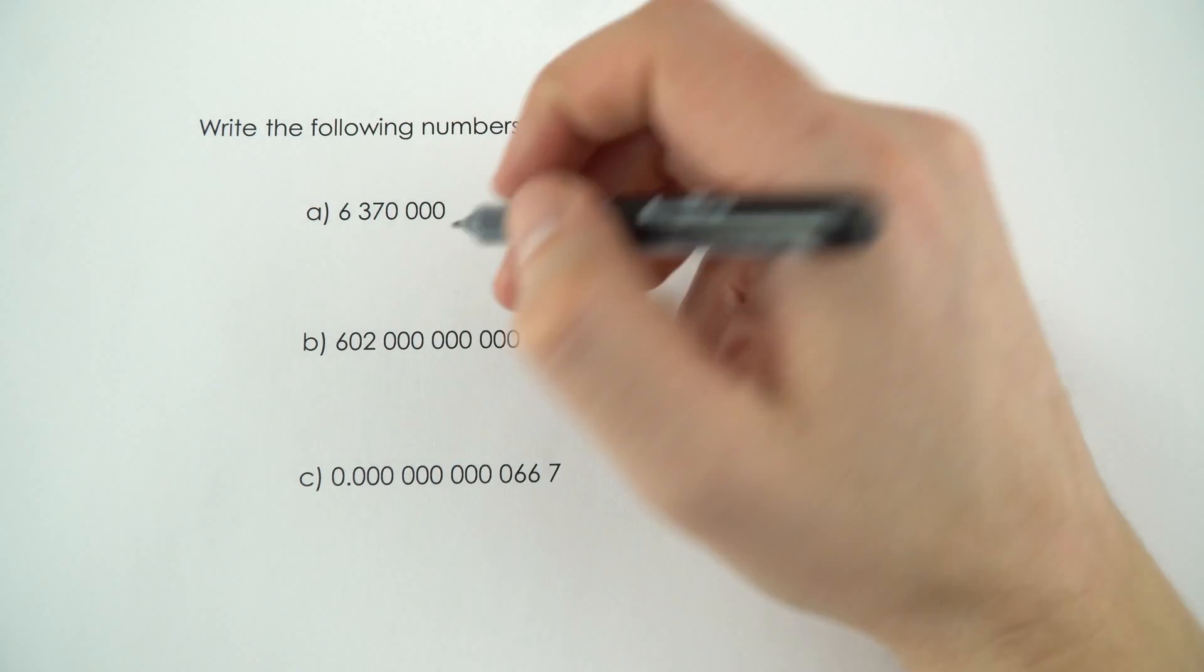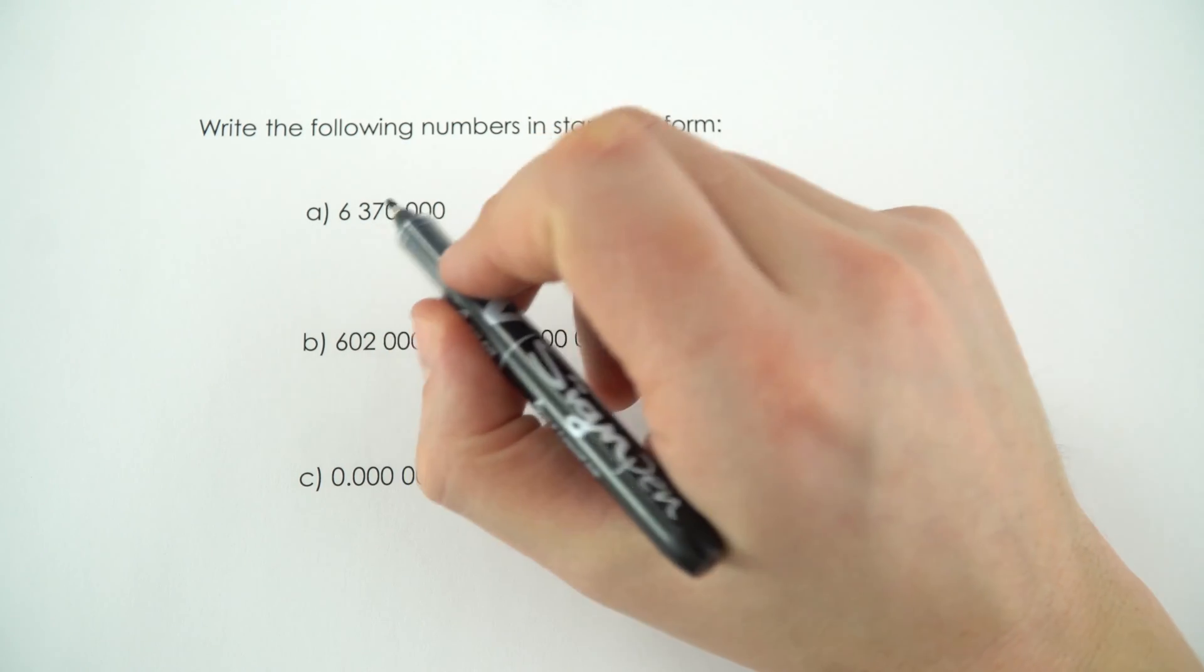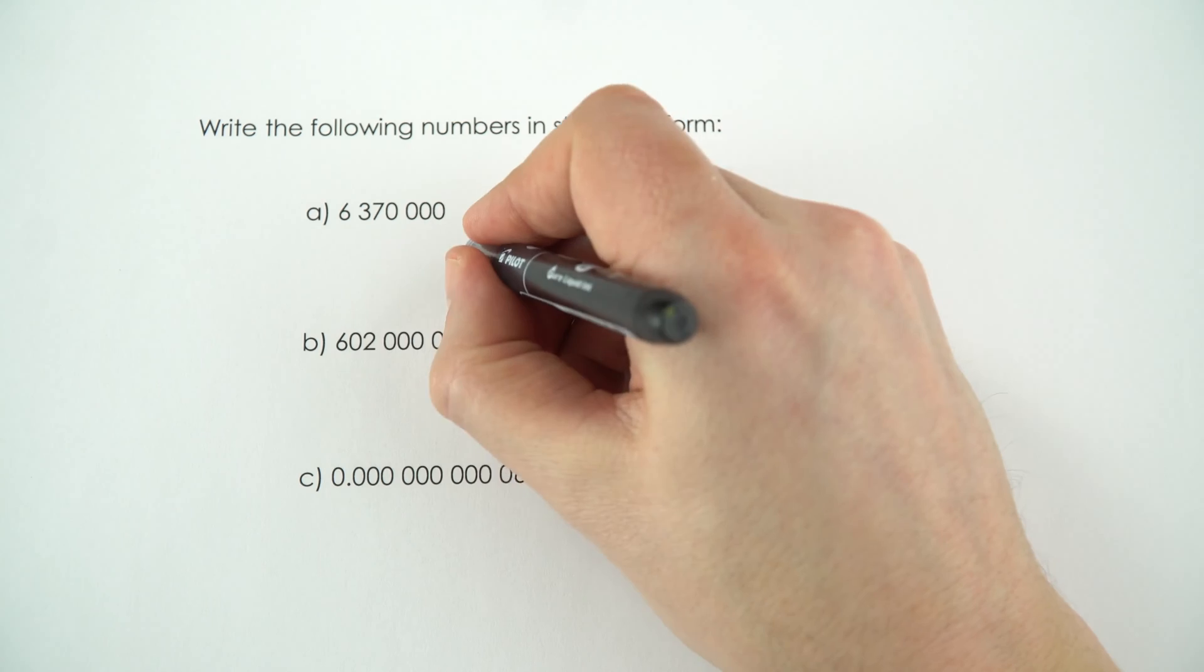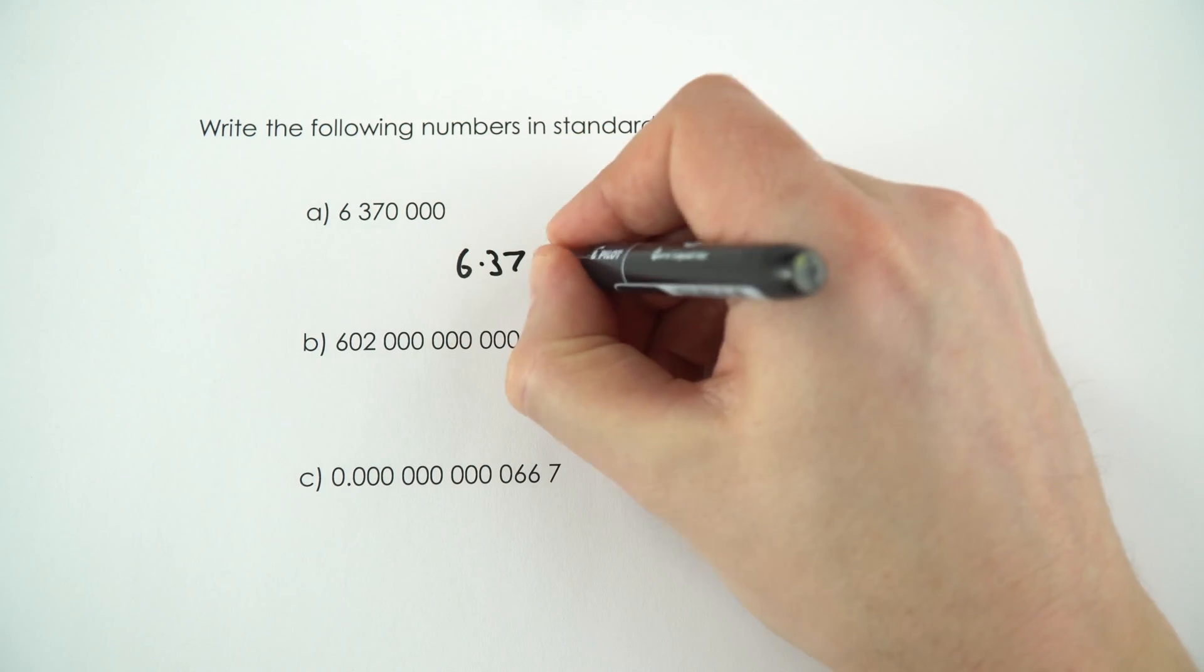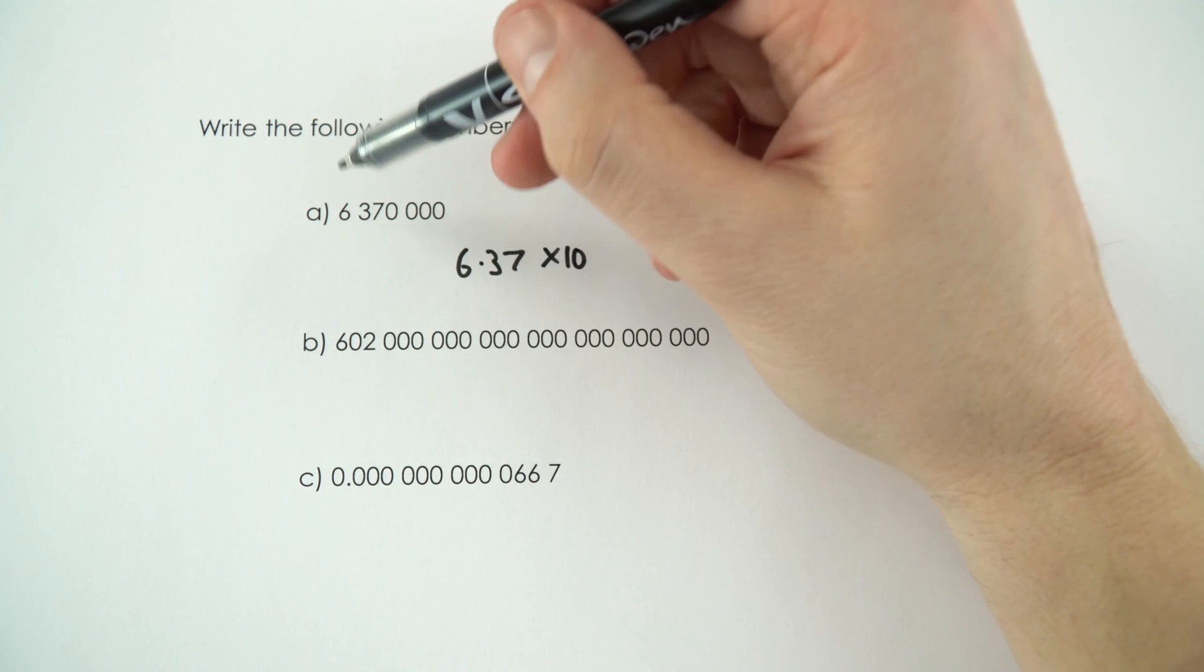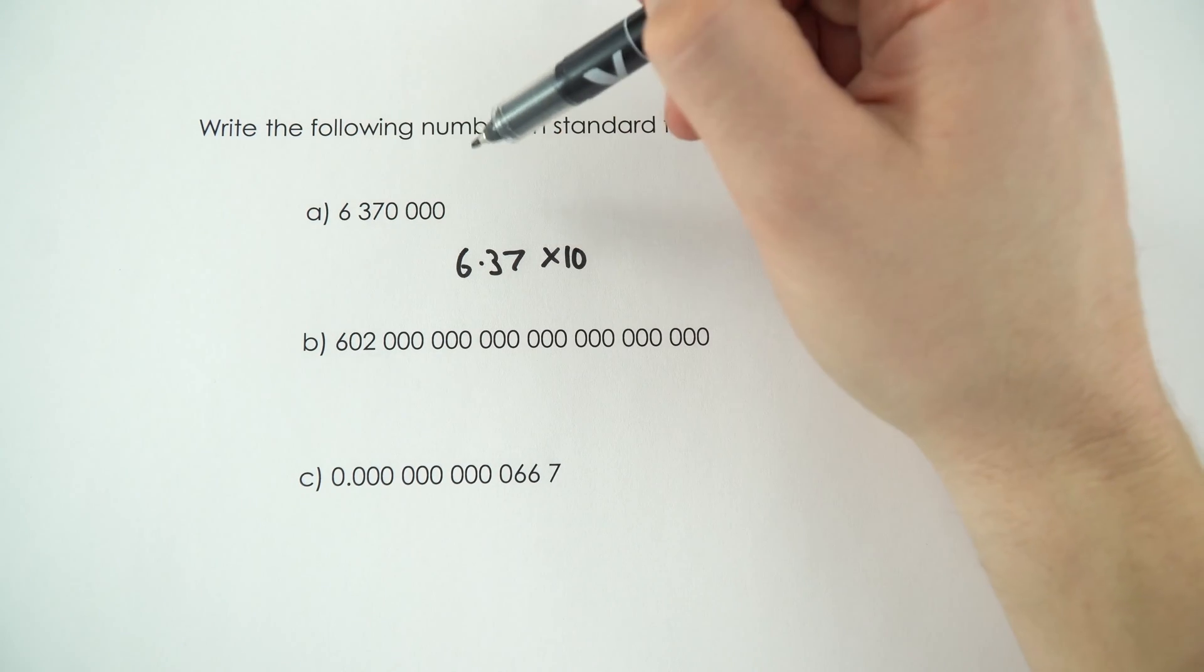So the way we're going to do this is the first number has to be between 1 and 10. So this one here is going to be equal to 6.37. And then when it comes to working out the power that we raise it to, well what we've got to do is basically move that decimal place 6 places.